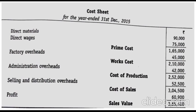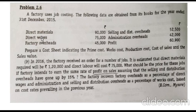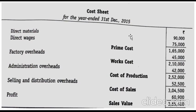They have given information for direct expenses. Direct material is 90,000 and direct wages is 75,000. Apart from these, there are no other direct expenses, so the total of these gives prime cost: 90,000 plus 75,000 equals 1,65,000.